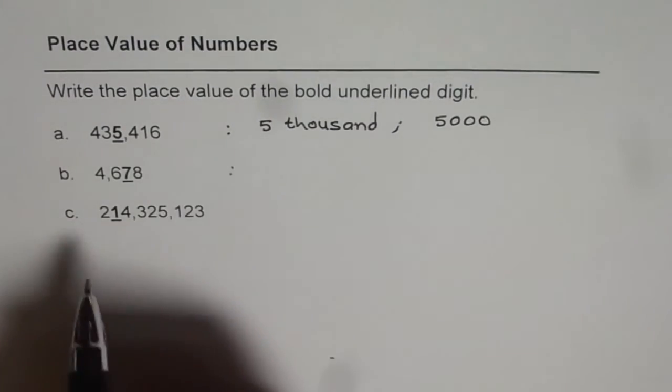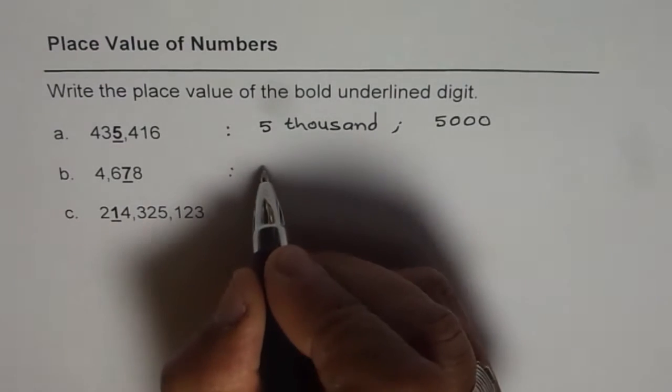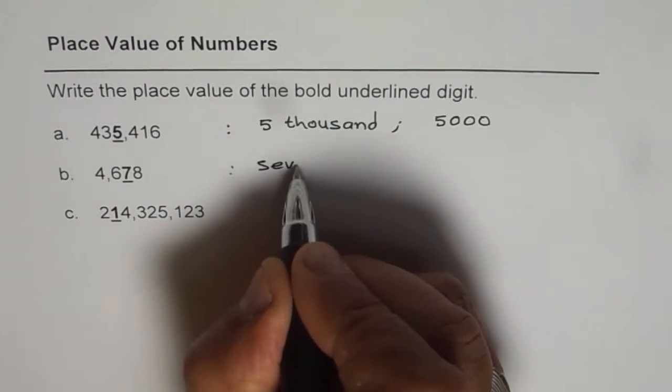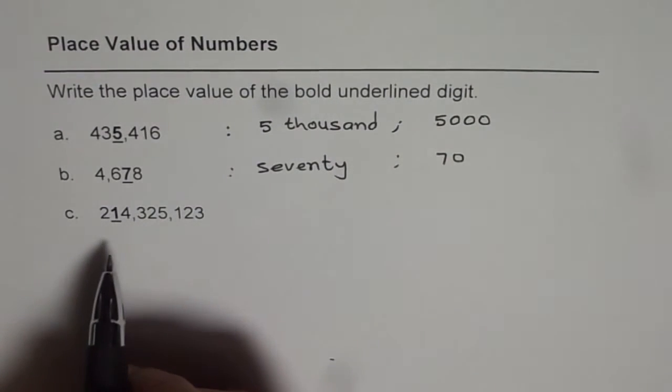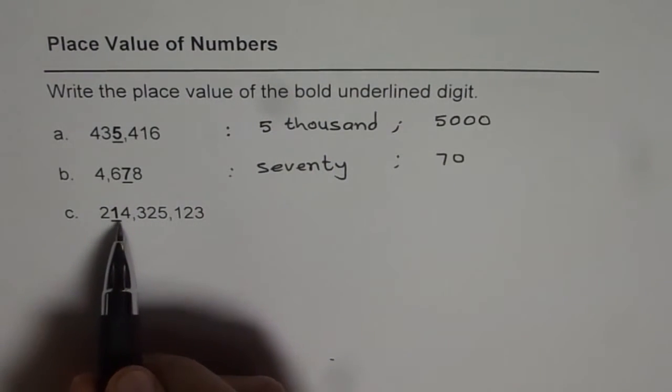The next one is 70, right? You can write this as 70. And then we have 10,000,000.